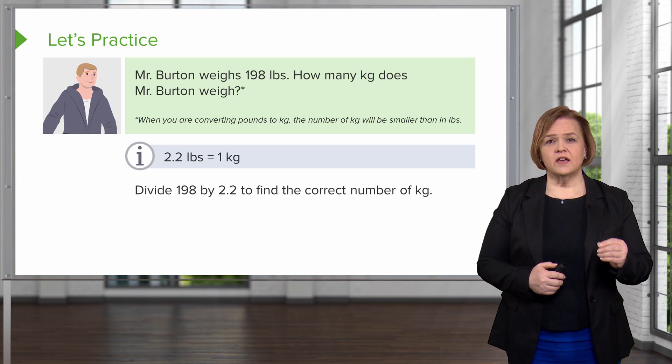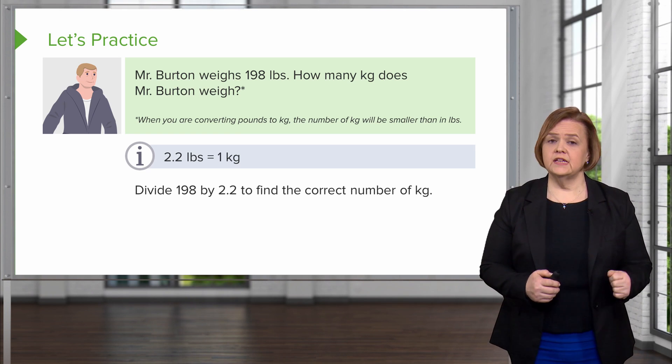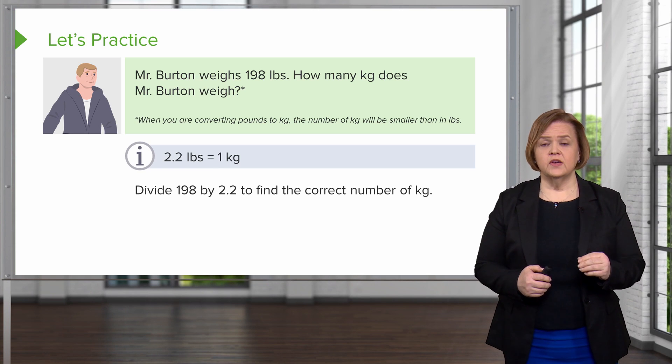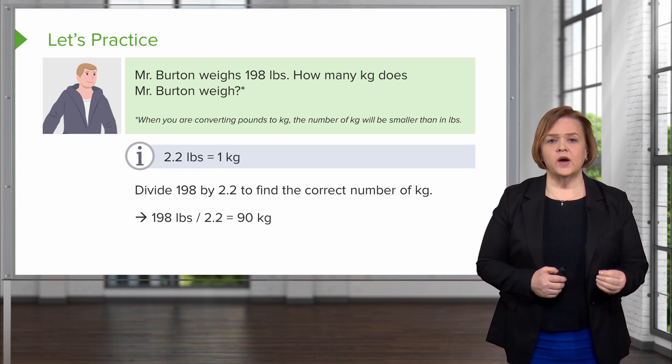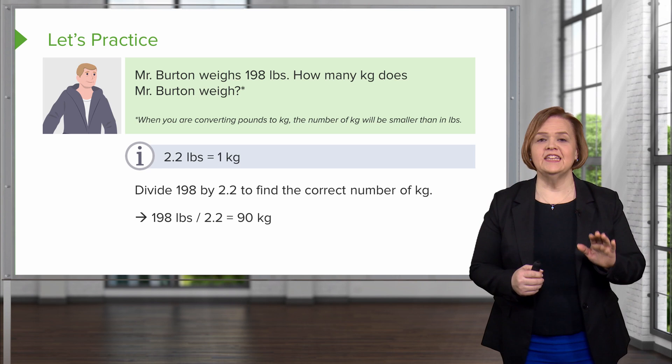So we know that he weighs 198 pounds. So we're going to divide 198 by 2.2 to find the correct number of kilograms. So 198 divided by 2.2 equals, ding, a perfect 90 kilograms.